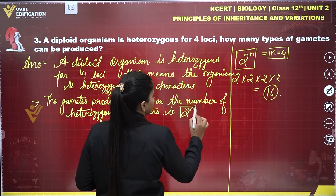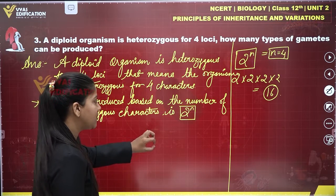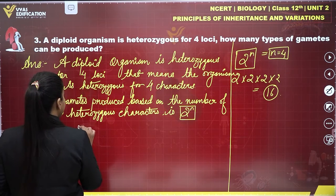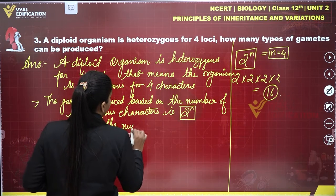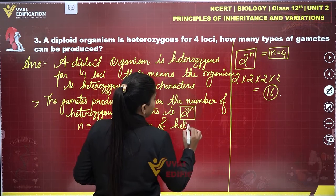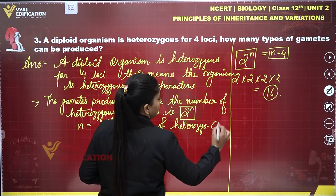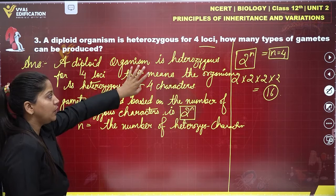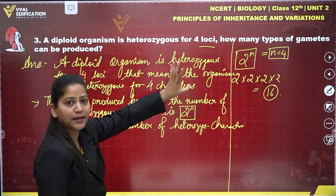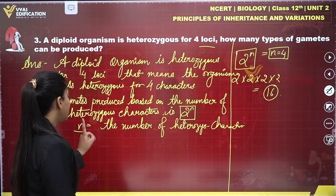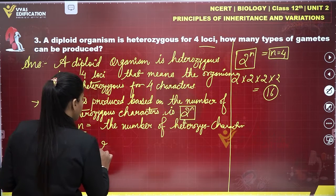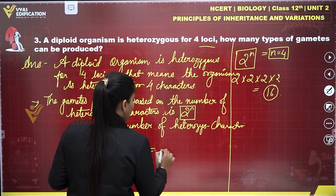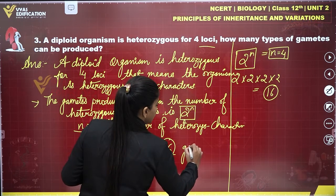The formula is two raised to the power n, where n equals the number of heterozygous characters. According to this question, the diploid organism has four loci, meaning four heterozygous pairs. So n is equal to four, and solving this gives us 16.